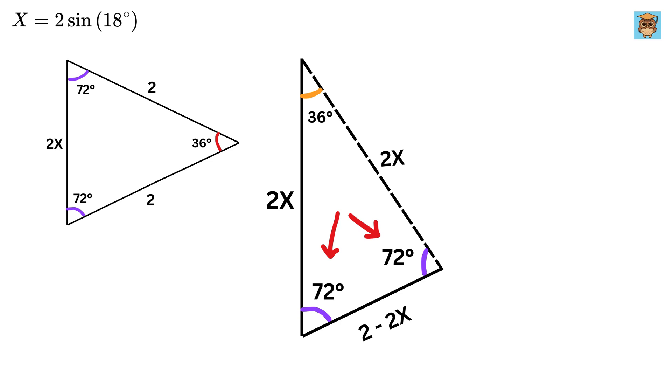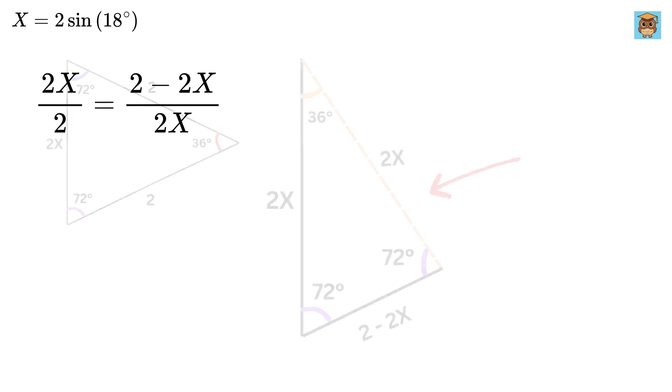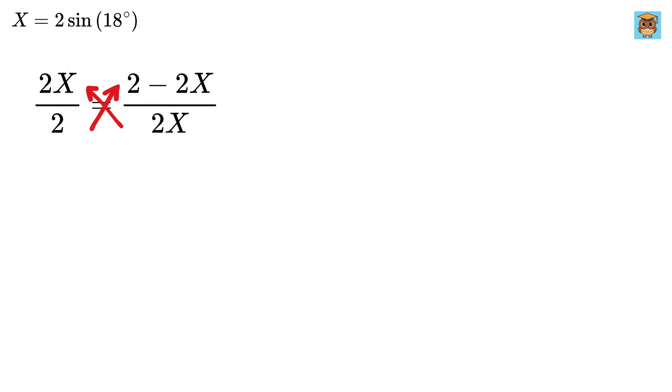Now consider this smaller triangle. This is 36 degrees and both these angles are 72 degrees, so both these triangles are similar to each other. Therefore, this side length, or 2x, over this side length, or 2, is equal to this side length, or 2 minus 2x, over this side length, or 2x. Triple nice!